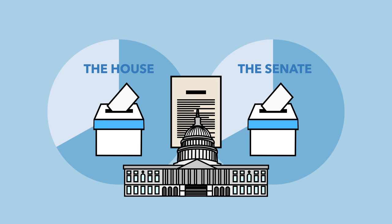If during that 10-day period Congress adjourns, then the bill fails to become law, and is referred to as a pocket veto. In this case, the bill dies either way. As you can see, there are so many ways for a bill to die, and so many stages that can end up killing the bill, that it's actually more unlikely that a bill will become law.